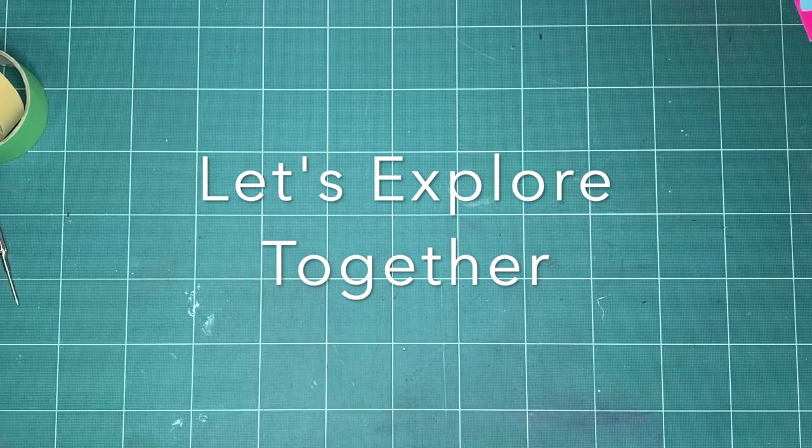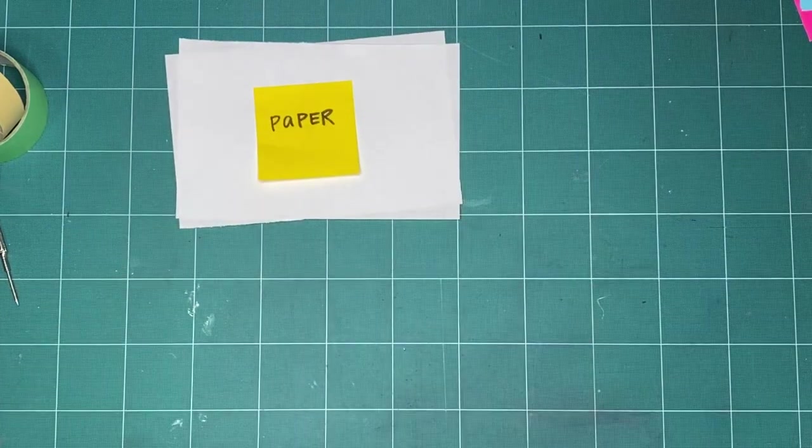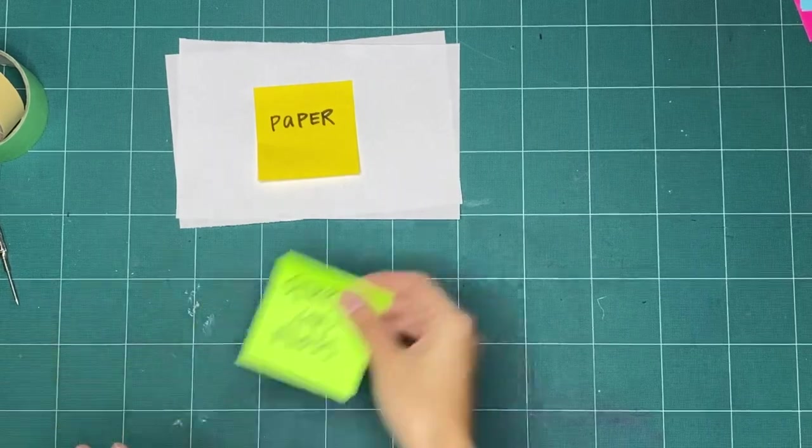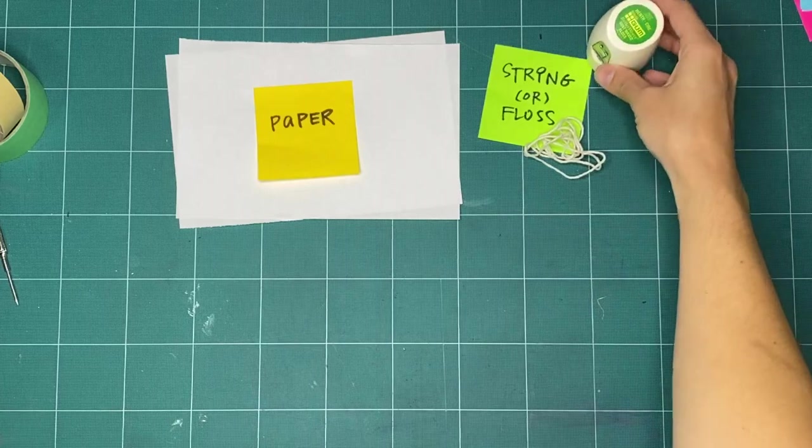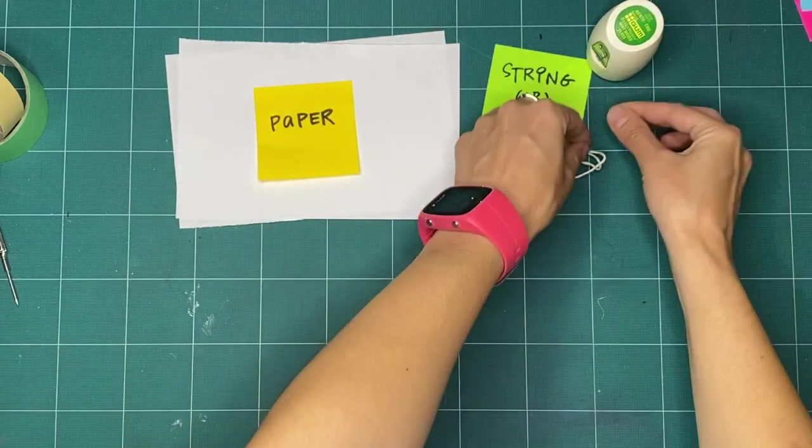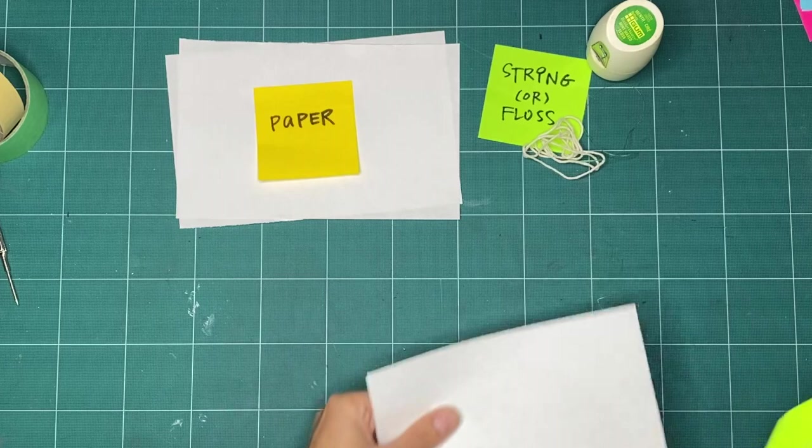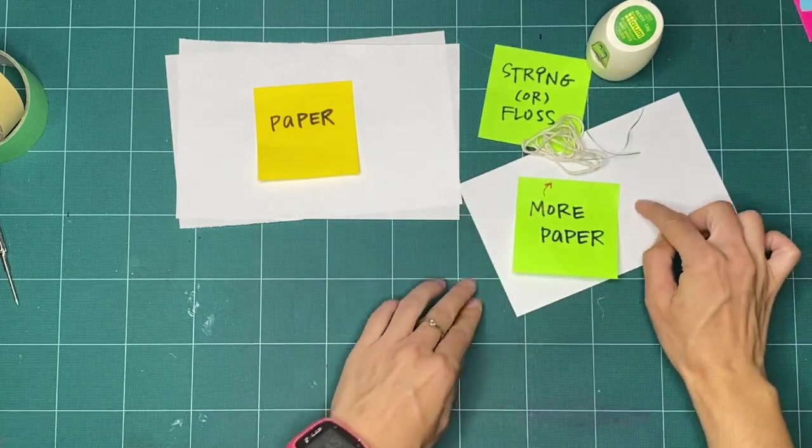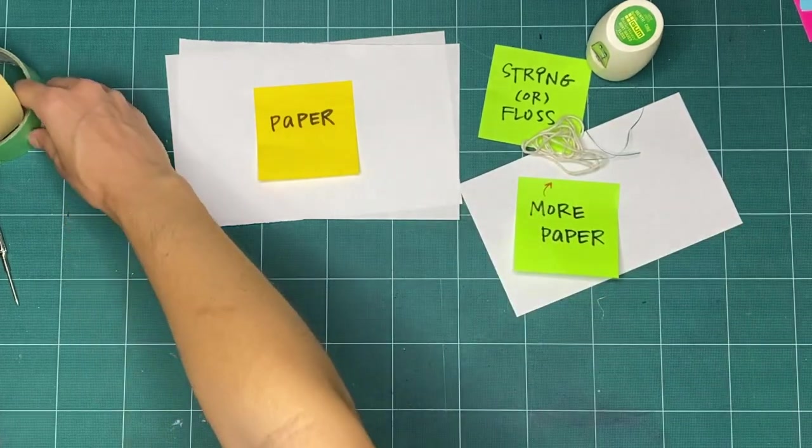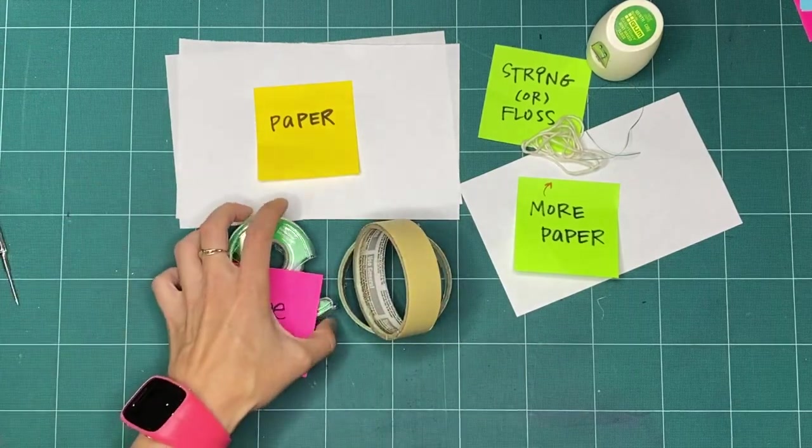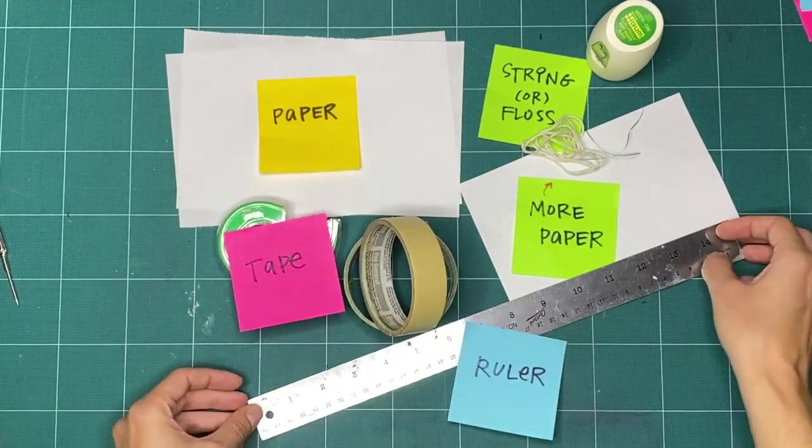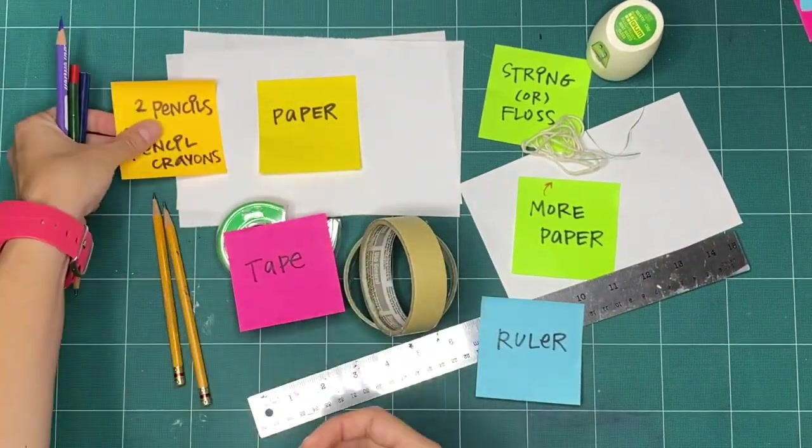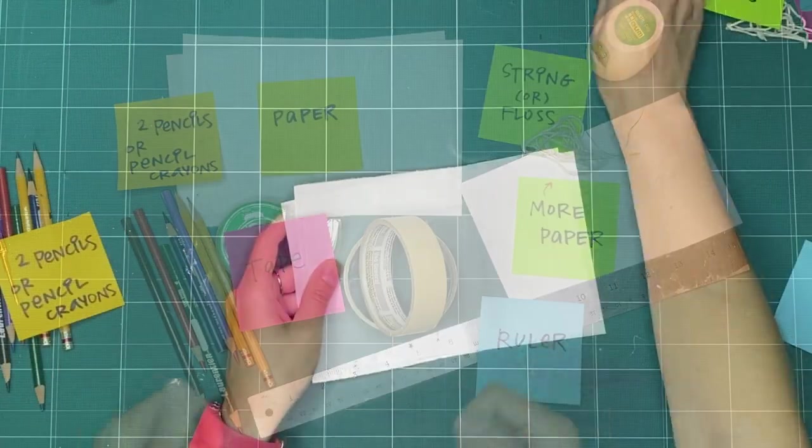Let's try making a perfect circle together with some tools we can make ourselves. For this activity, let's get a piece of paper, any size, and remember you can always get something out of the recycling bin. A piece of string, or floss. Don't have string or floss? That's okay. Another piece of paper will also work. If you found some string or floss, grab some tape. If you're using another piece of paper, you don't need any tape. A ruler. And two pencils. You can use a pencil crayon too if you want. All ready?